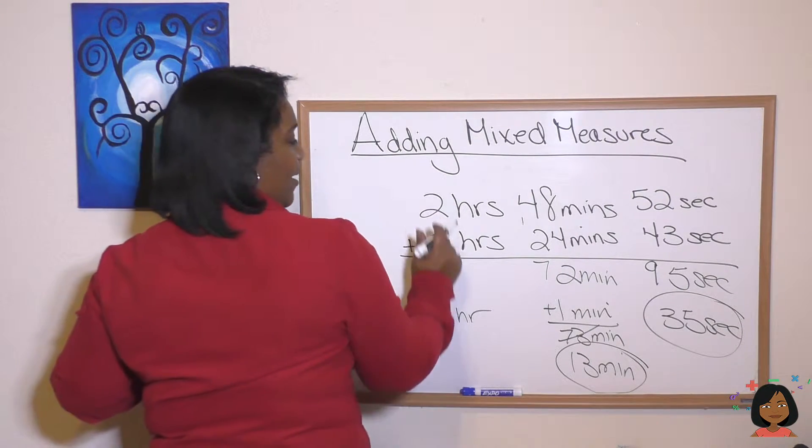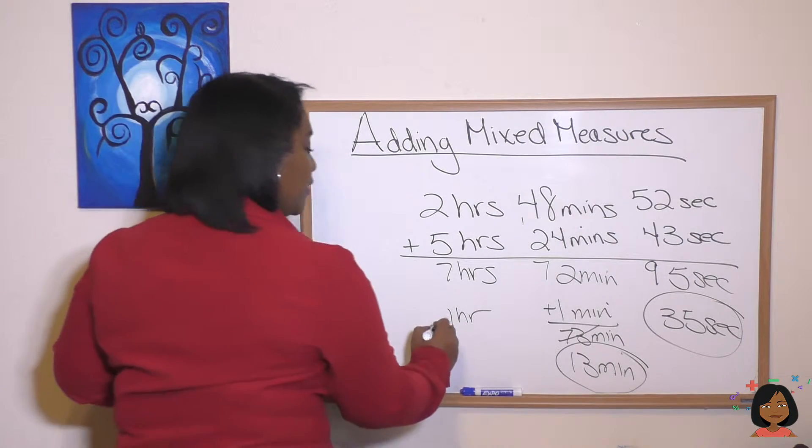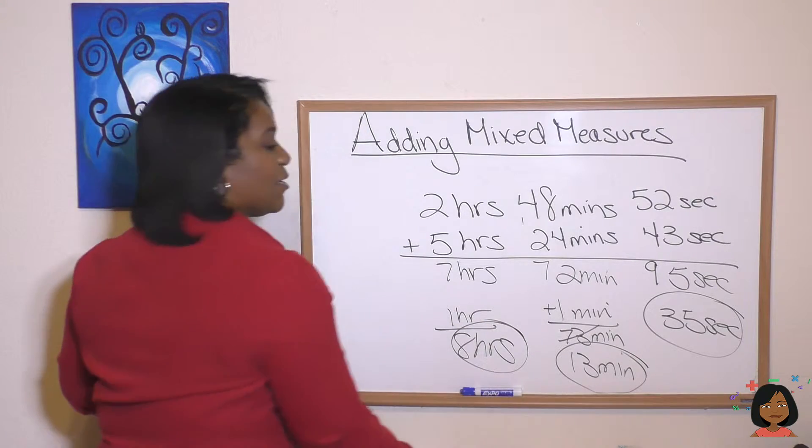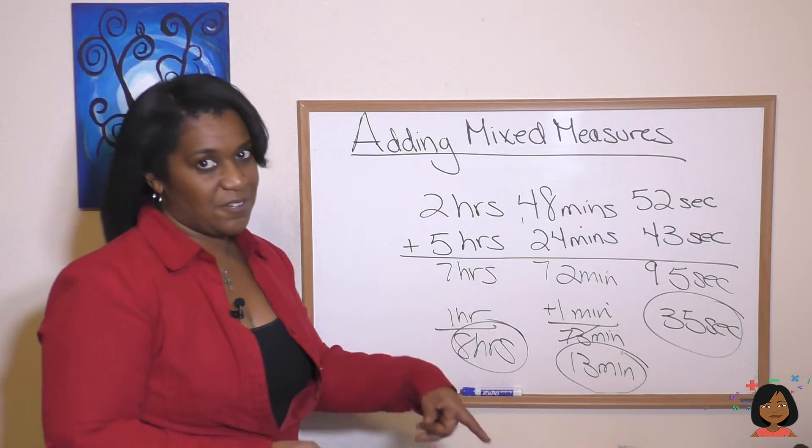Here we go. Five and two is seven hours plus the one we brought over. That gives me eight hours. I'm circling it. What do we have left? Eight hours, 13 minutes, and 35 seconds.